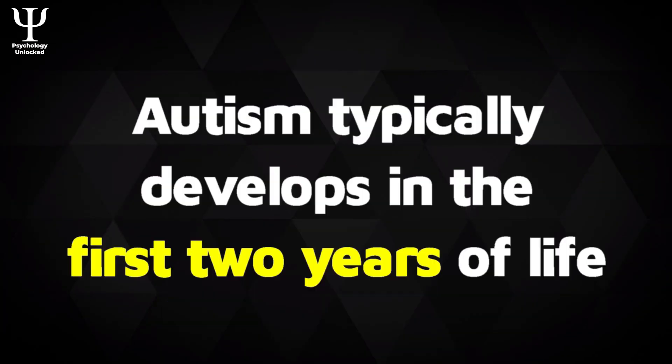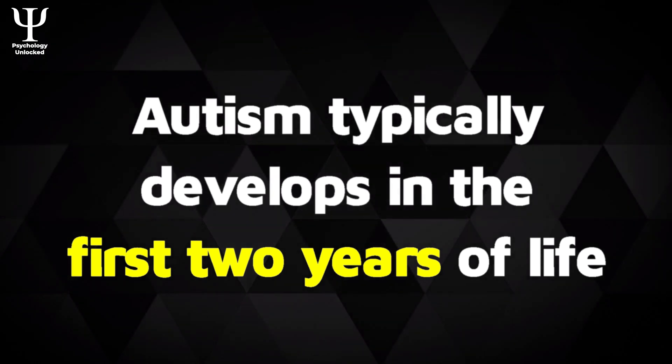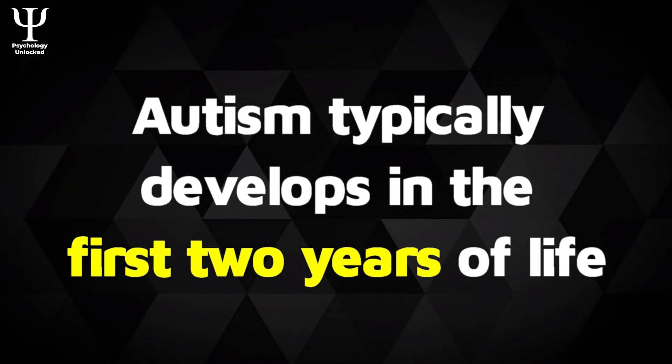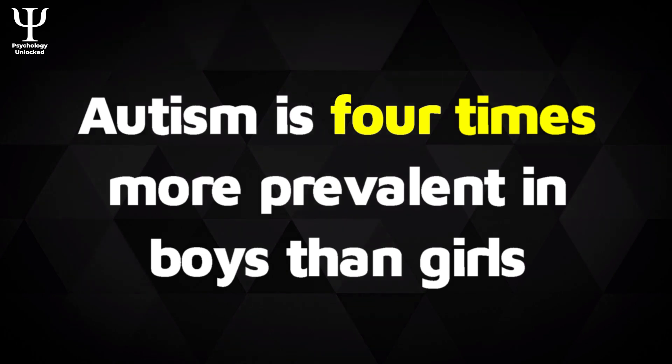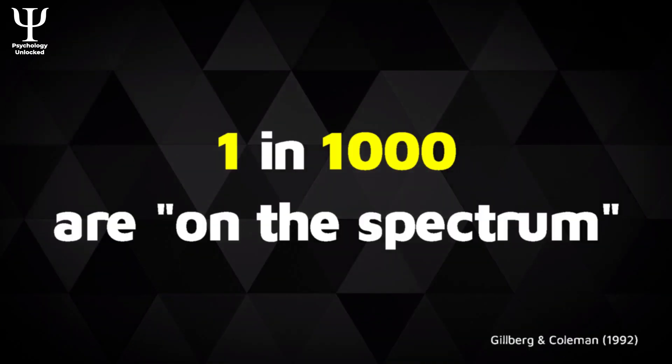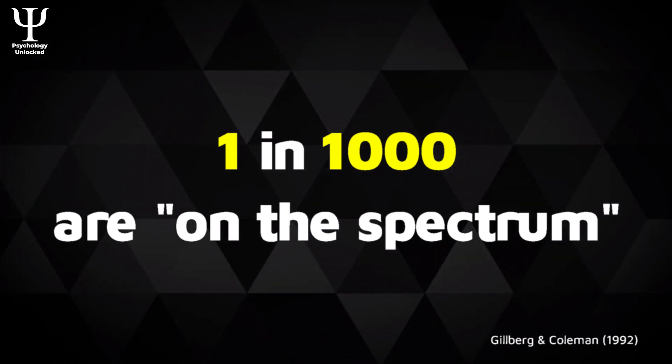Though there are instances of later diagnosis, autism typically develops in the first two years of a child's life, and is four times more common in boys than girls. And in most Western societies, even though there's a general ignorance about the condition, autism isn't all that rare, with one in every thousand being on the spectrum.